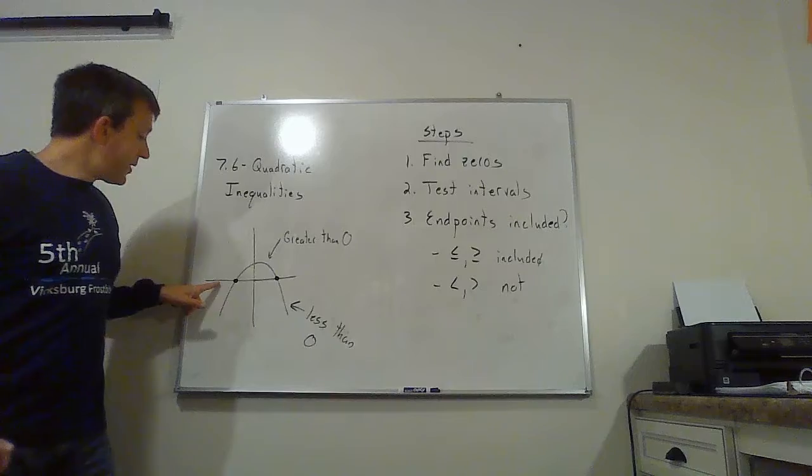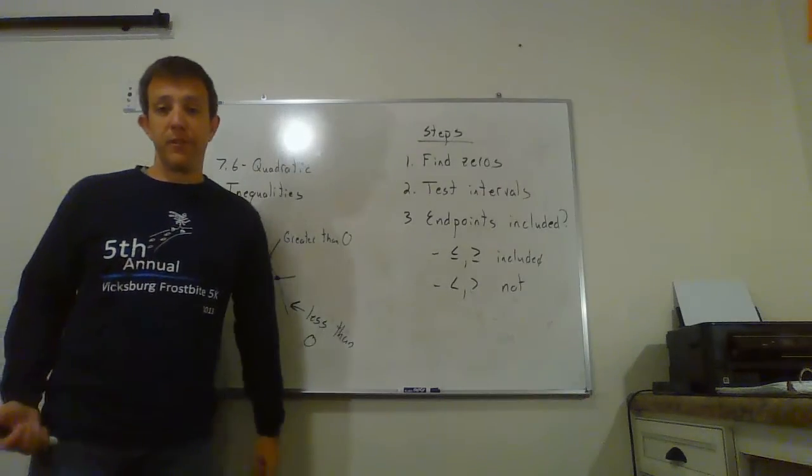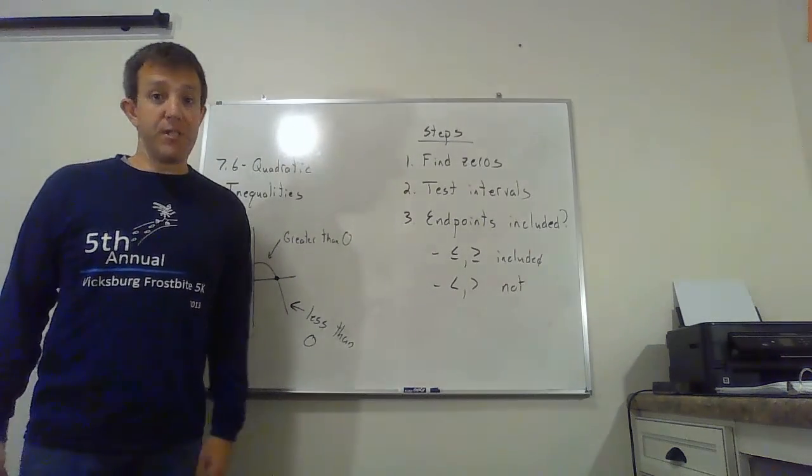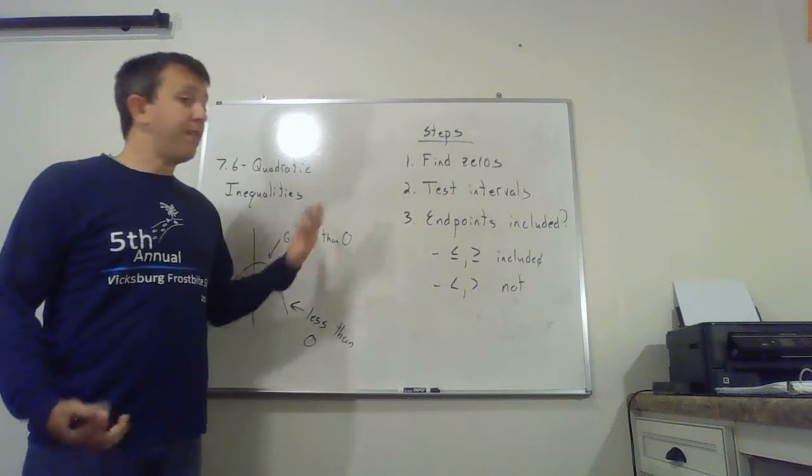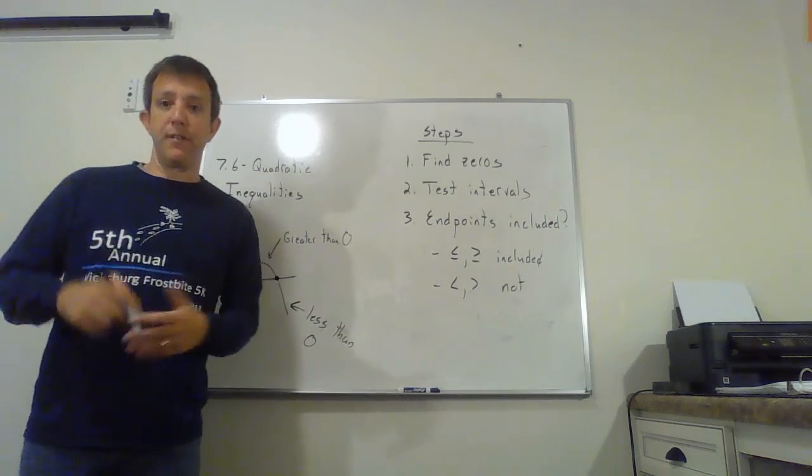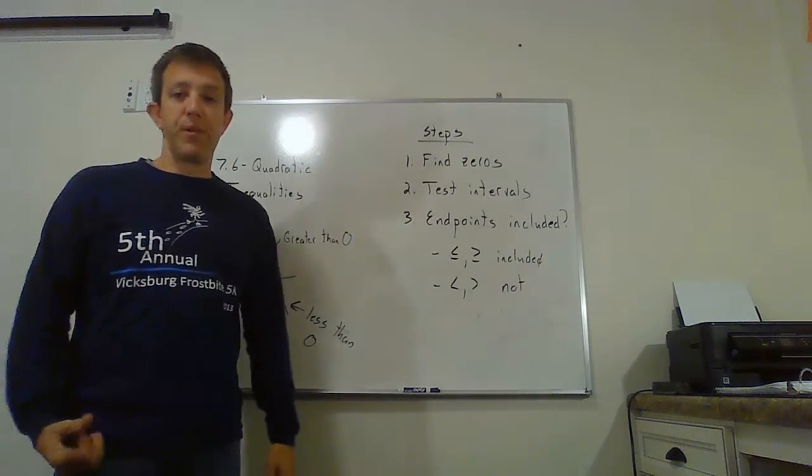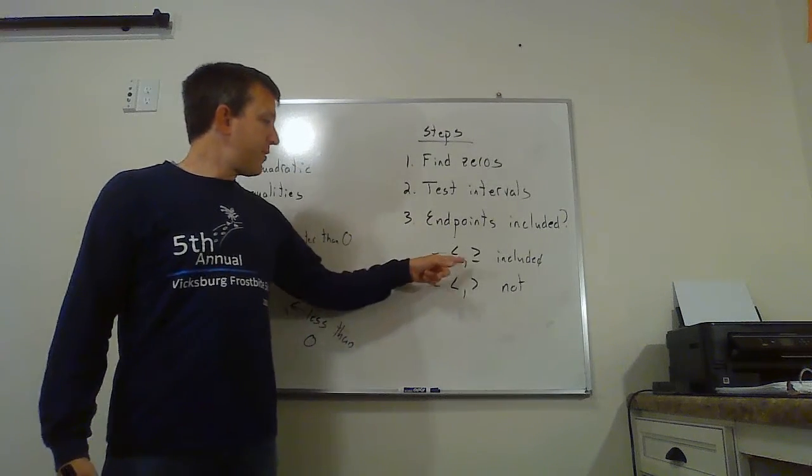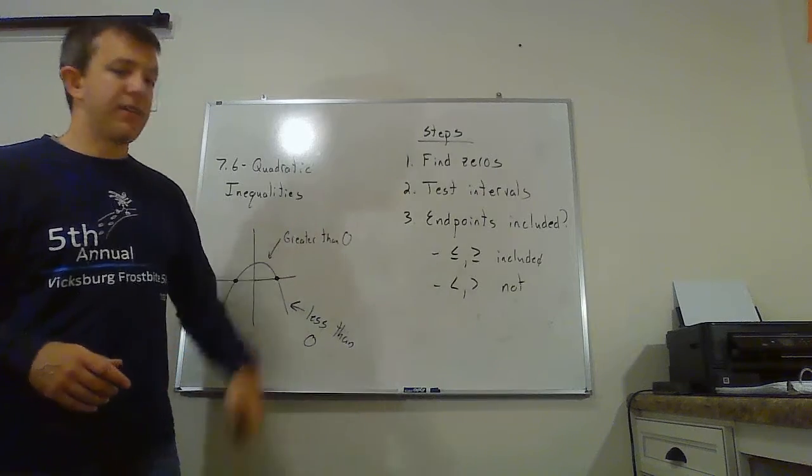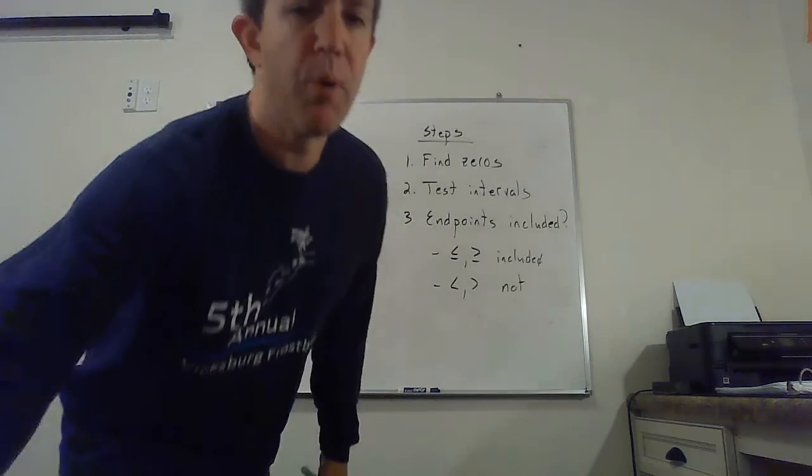We know that these are where it can change from positive to negative or negative to positive. Step two, we're just going to test each interval. See if it gives us something that is positive or negative. And then we have to ask ourselves, are the endpoints going to be included? For less than or equal to and greater than or equal to, it will be. For less than or greater than, it will not.